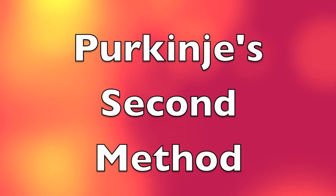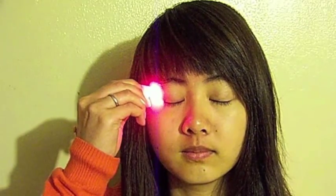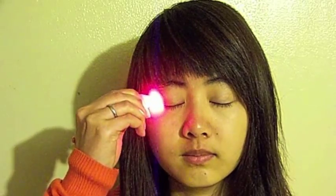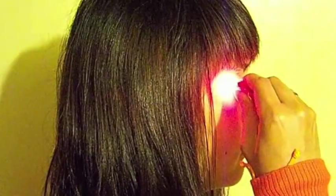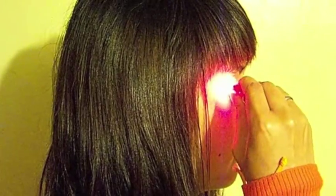In 1825, Purkinje published a variation on his original method in which he focused the spot of sunlight onto the white of the eye. A safer way of doing this is to hold a red LED against the corner of your closed eye and move the light in small circles.